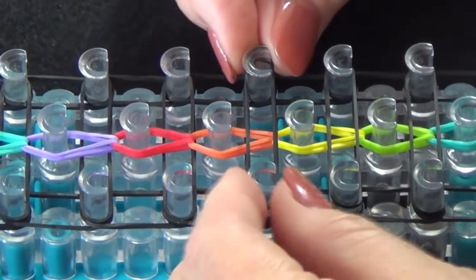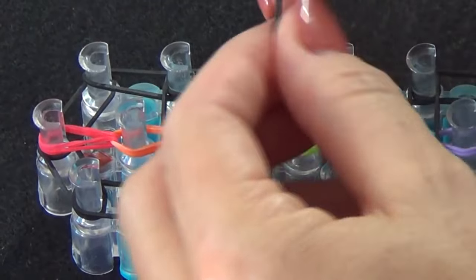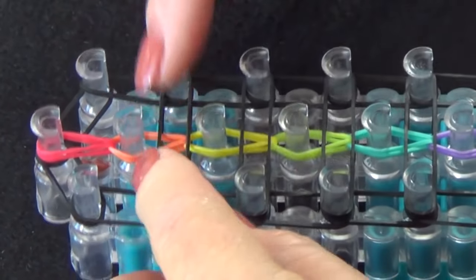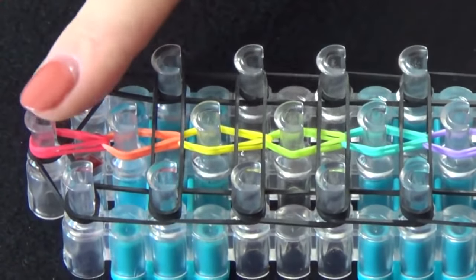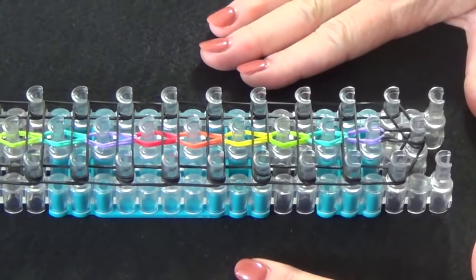And we'll continue laying these bands until we reach the end of the loom. Now this is the last black band that we place across the loom. We do not use these last three pins on the loom.